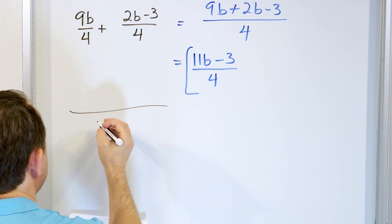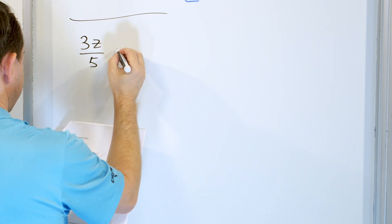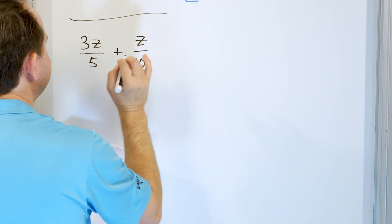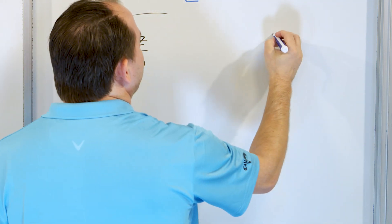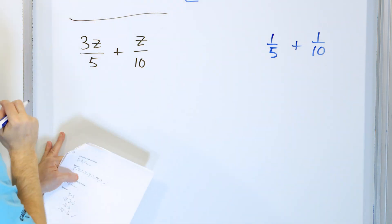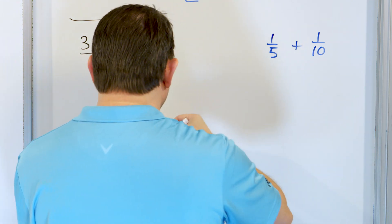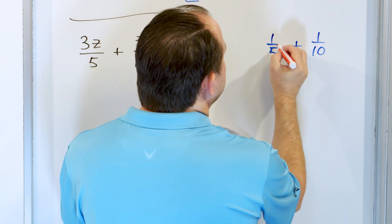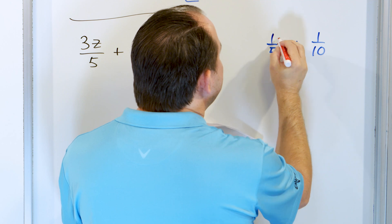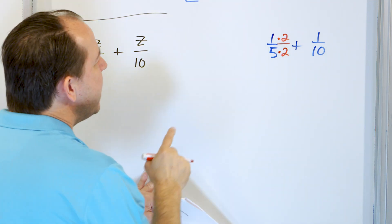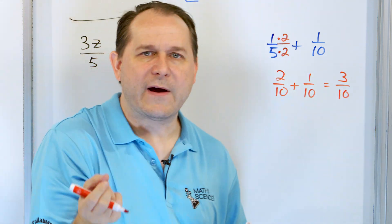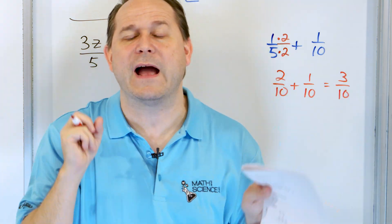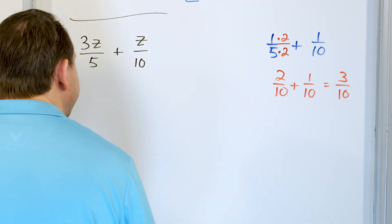Now here is what we need to start paying attention to: three Z over five plus Z over ten. We do not have a common denominator, so we can't add them right away — we have to do something first, just like regular fractions. Let's review with a simpler example: one fifth plus one tenth. We want a common denominator, so I can multiply the first fraction top and bottom by two, getting two tenths plus one tenth, which gives three tenths. In this case I only had to manipulate one of the fractions.